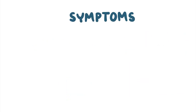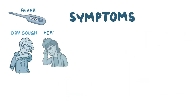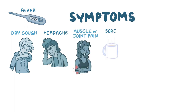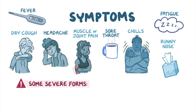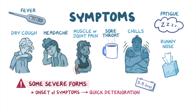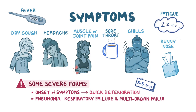The symptoms of zoonotic influenzas include fever, dry cough, headache, muscle or joint pain, sore throat, chills, fatigue, and runny nose. In some severe forms of influenza, the onset is characterized by quick clinical deterioration approximately 3 to 5 days after the first symptom onset. Some patients quickly progress to pneumonia, respiratory failure, and multi-organ failure.